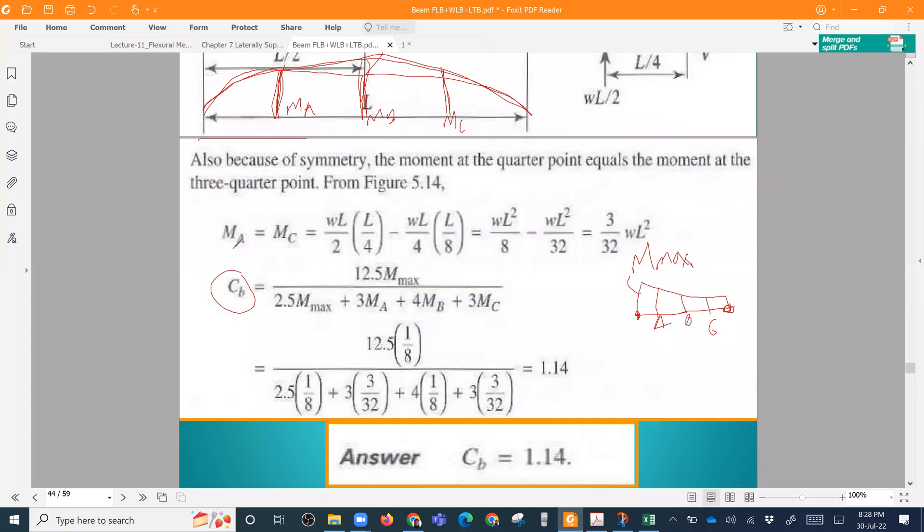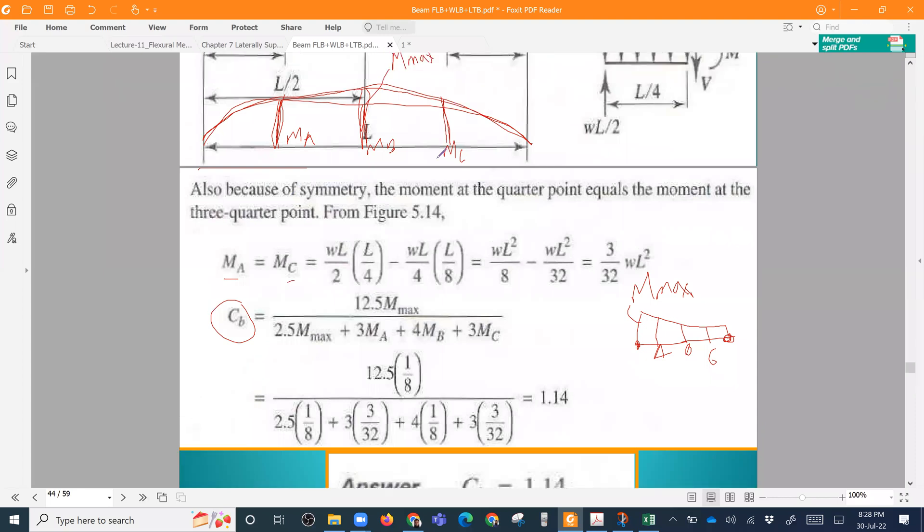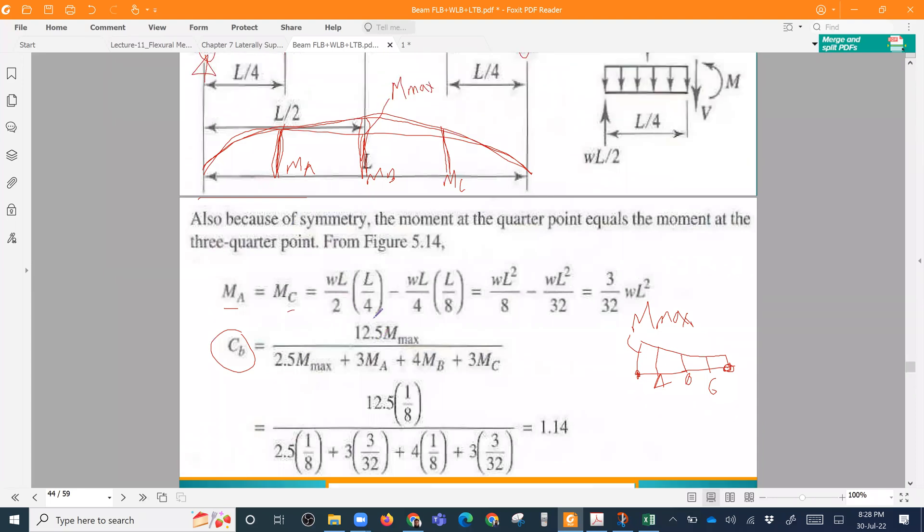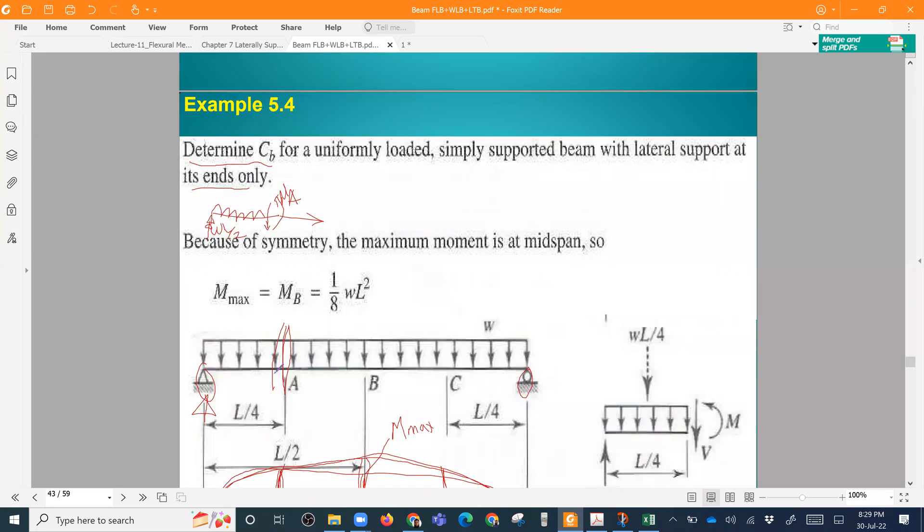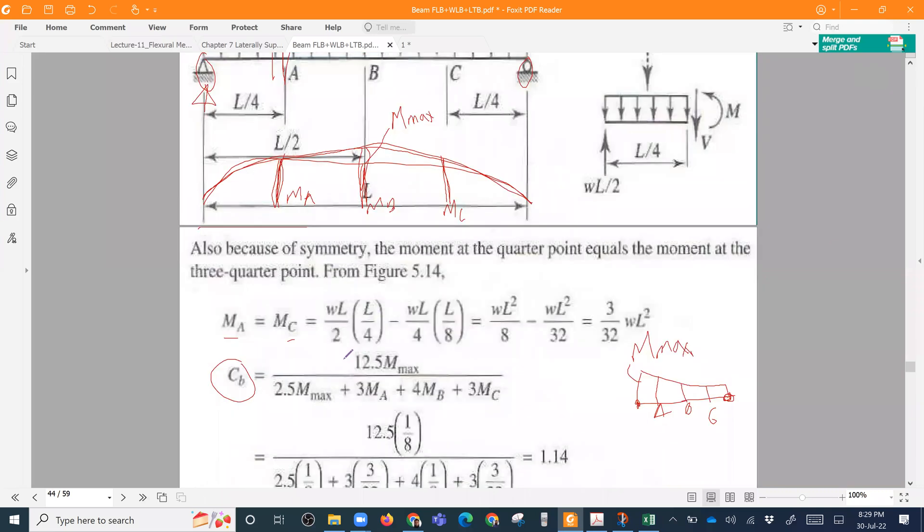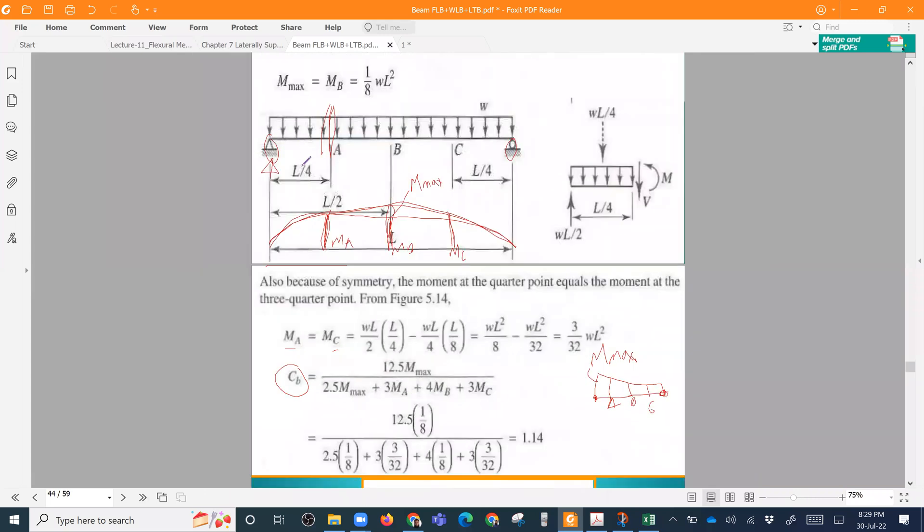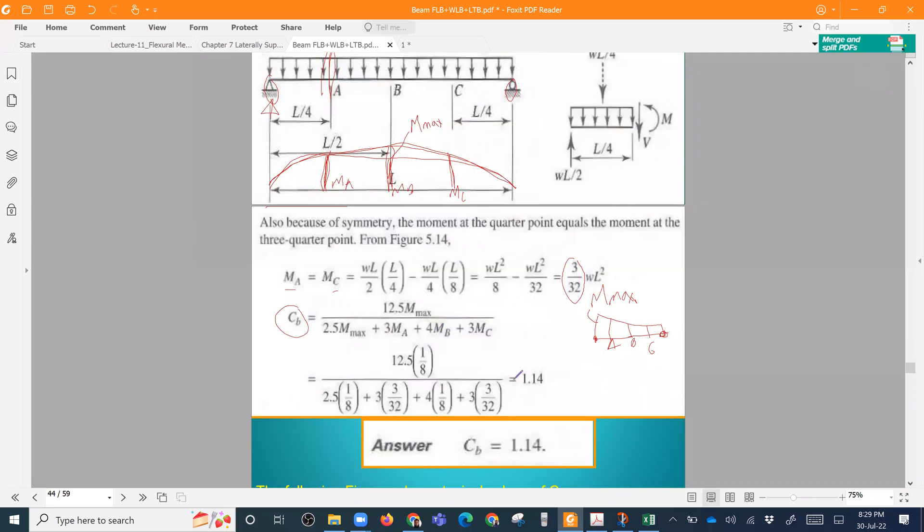We can see that M A and M C are the same. Now we can see that M A is W L by 4. So that means we have 3 by 32 W L square. So we can see that we have a factor of 1.14.